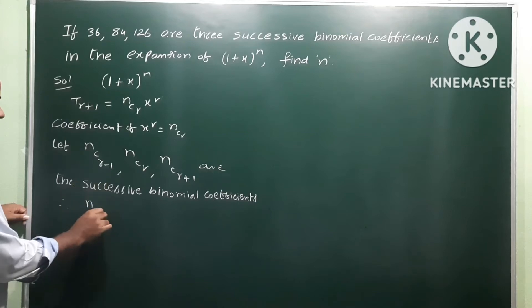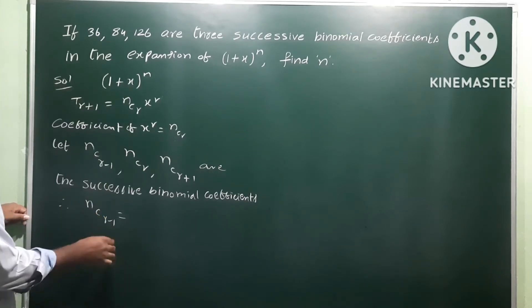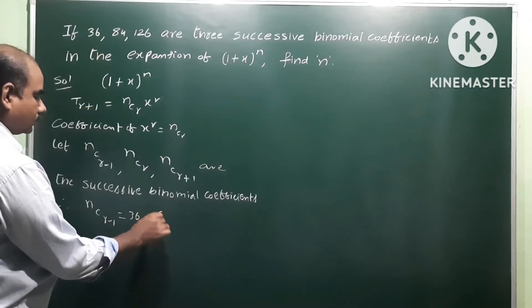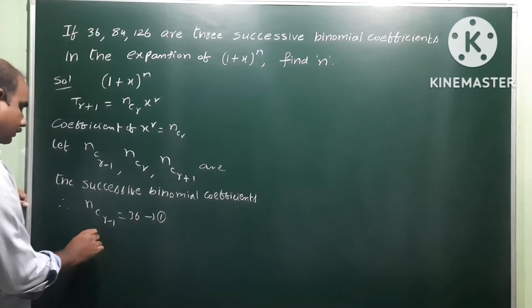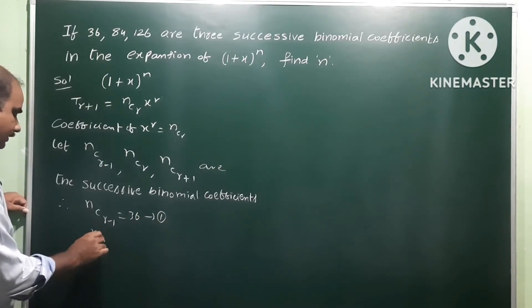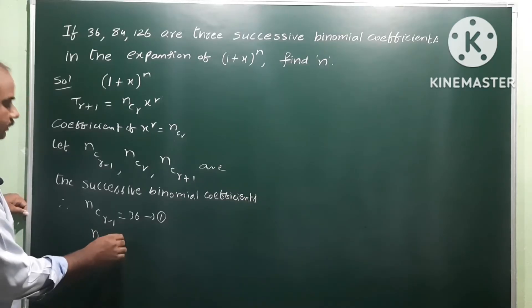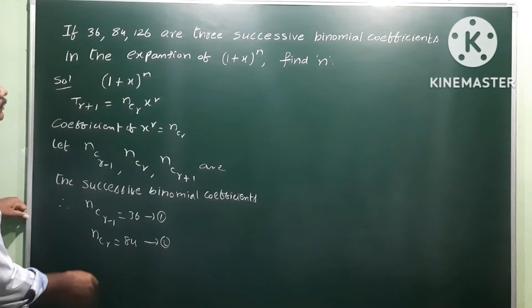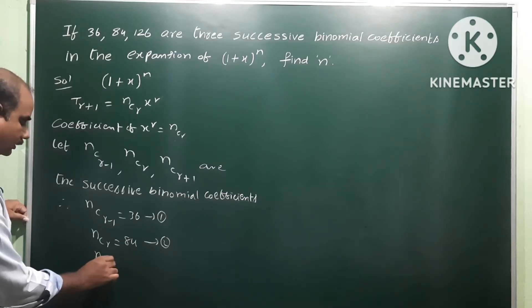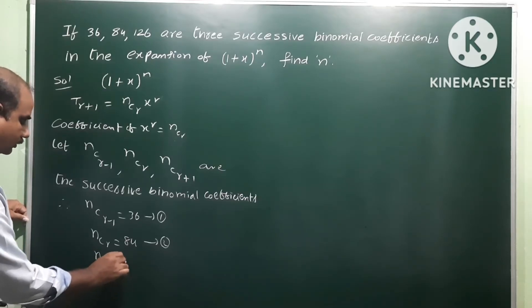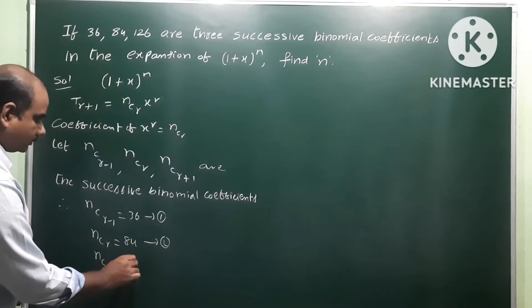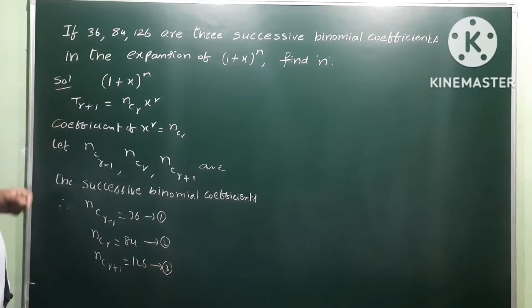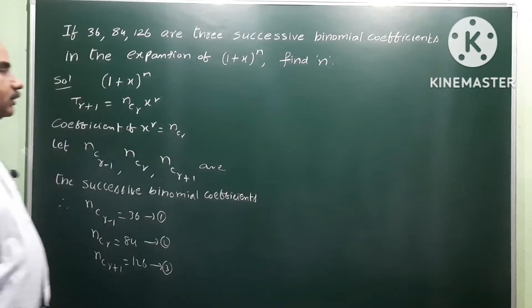Since 36, 84, 126 are three successive binomial coefficients, we assign: nC(r-1) = 36 as equation 1, nCr = 84 as equation 2, and nC(r+1) = 126 as equation 3.